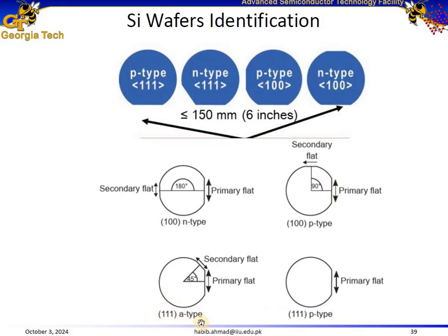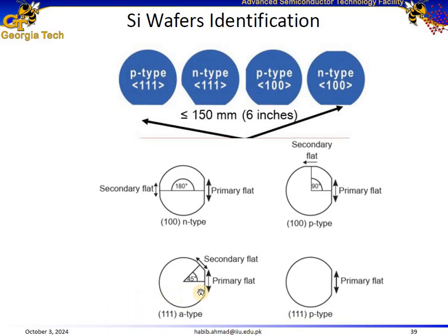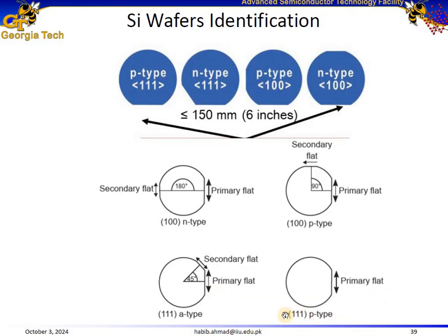Then we have silicon 111 n-type — note there is a typo in the image; it should read n-type, not A-type. Silicon 111 n-type has a secondary flat which is located at 45 degrees relative to the primary flat. Silicon 111 p-type wafer only has the primary flat; it does not have a secondary flat, simplifying the identification.